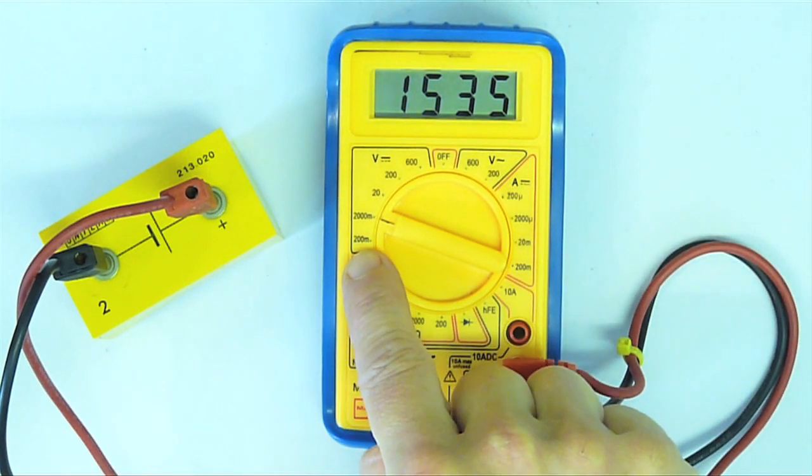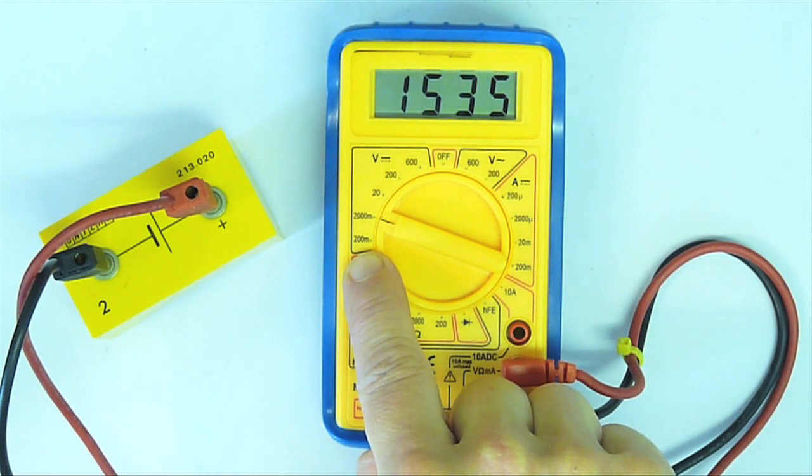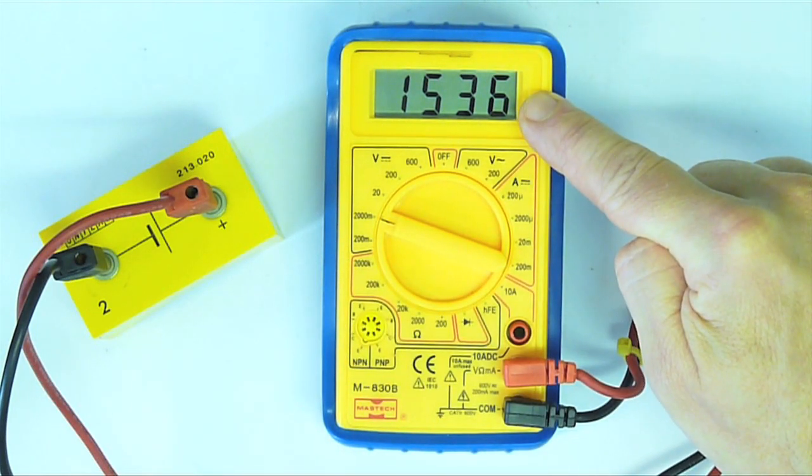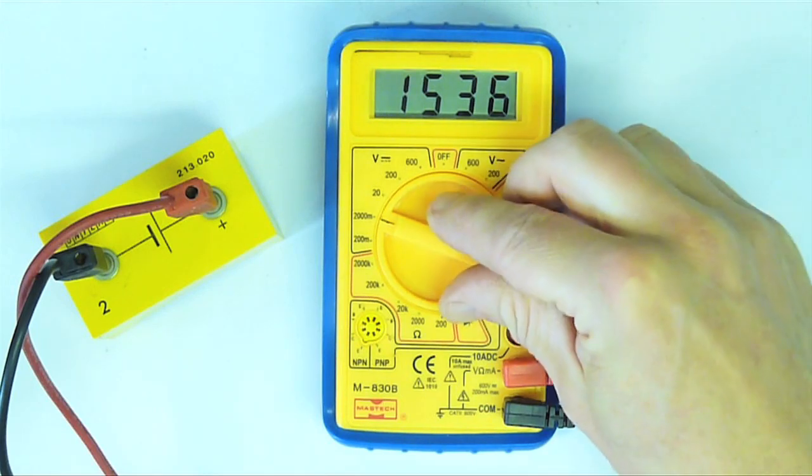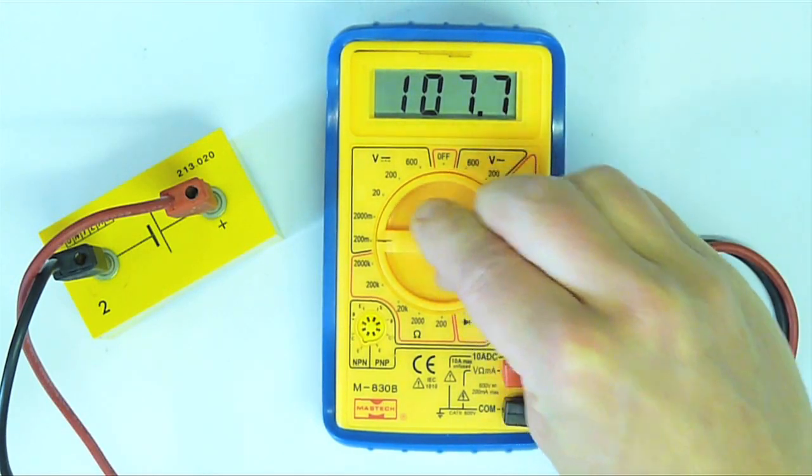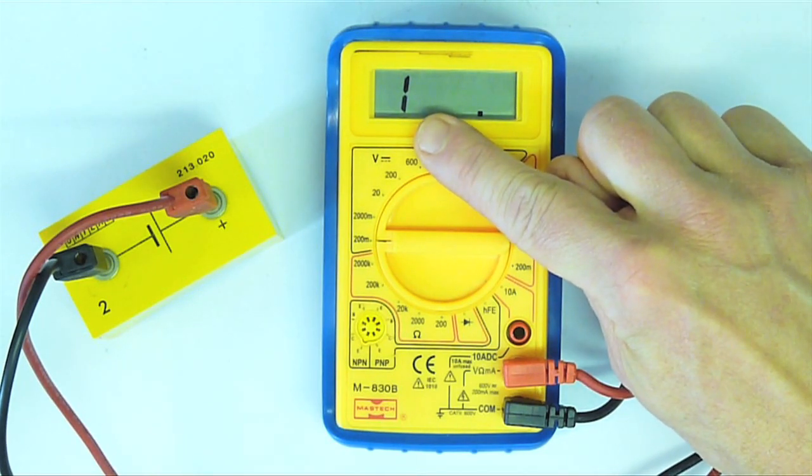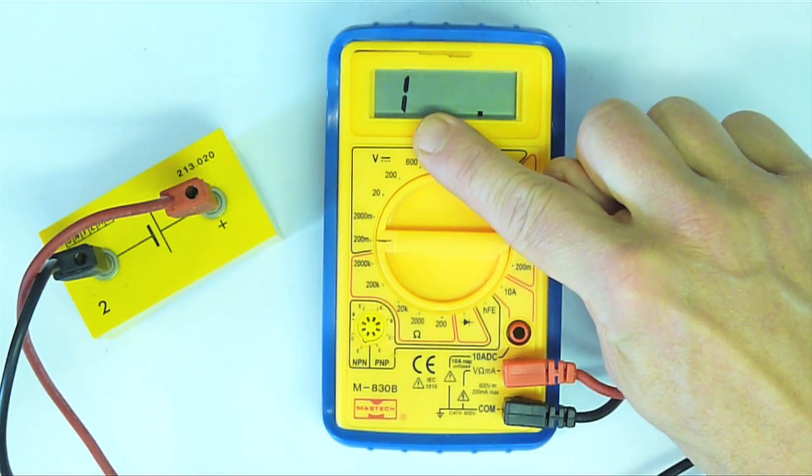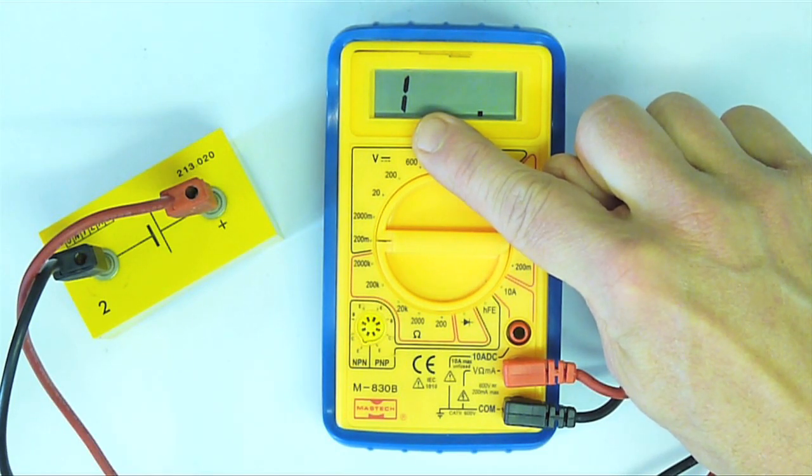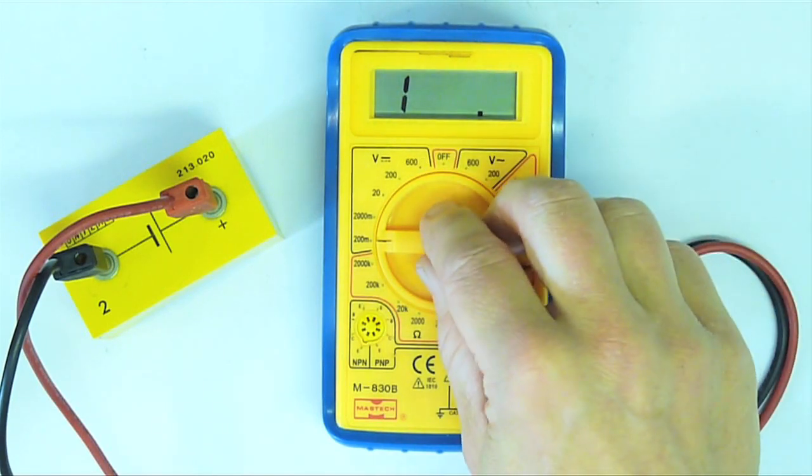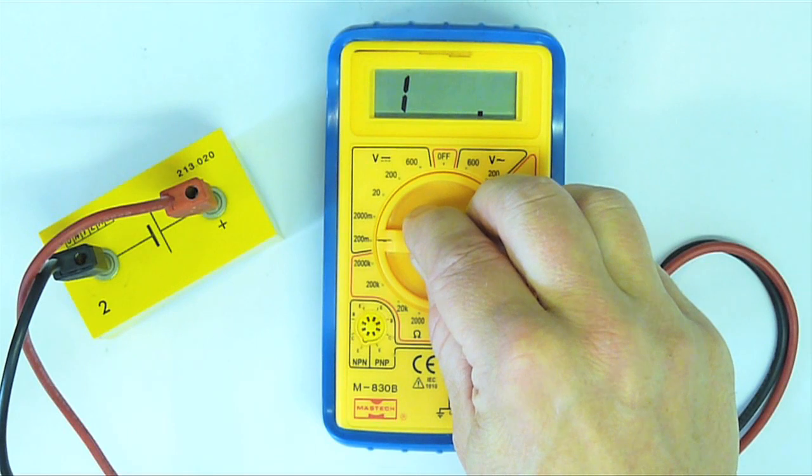The next range down is marked 200 millivolts. If I was to change down to this range, you can see that the reading is too high for it. Let's do it and see what happens. The reading has now gone, and I just get a 1 on the display. This means that the voltage input is too high for that range. If this happens when you're doing an experiment, you simply need to increase the range until you get a proper reading.